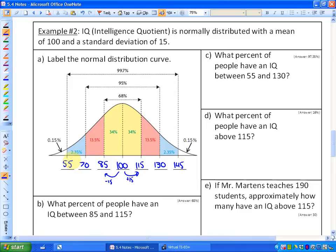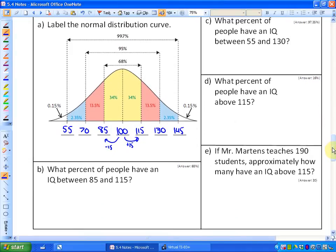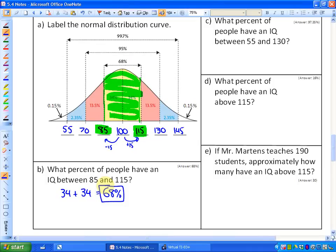Part B says the following. It says what percent of people have an IQ between 85 and 115? So if we look at 85, which is right here, and 115, which is right here, that would be, so between those two values would be this group of people here. And that would be a 34% plus a 34%. In other words, this is one standard deviation on either side of the mean. So that would be 68% of people would have an IQ between 85 and 115.